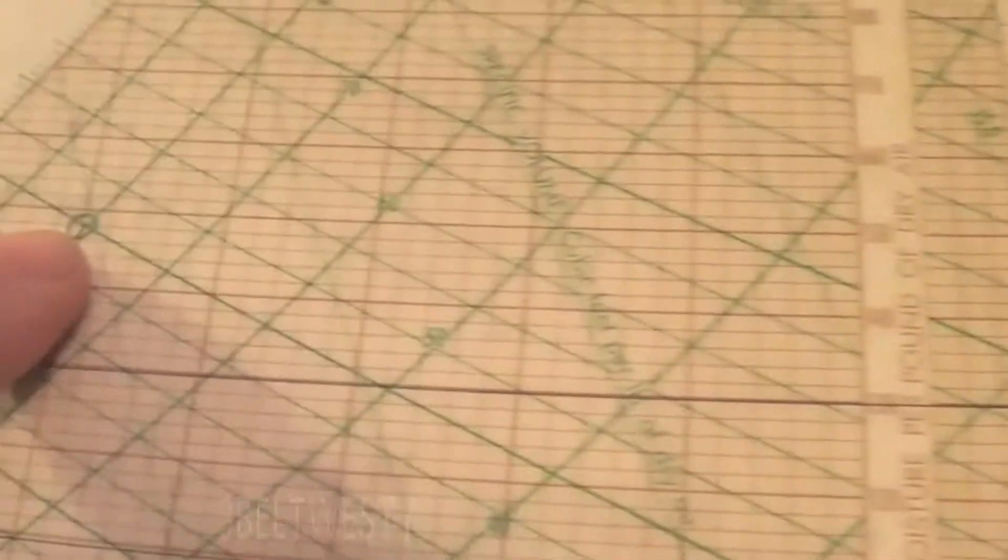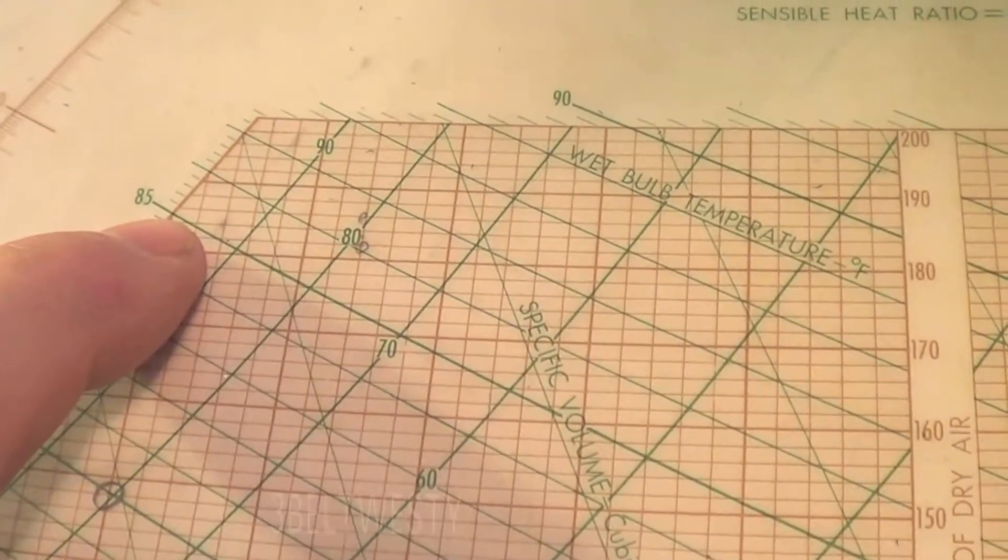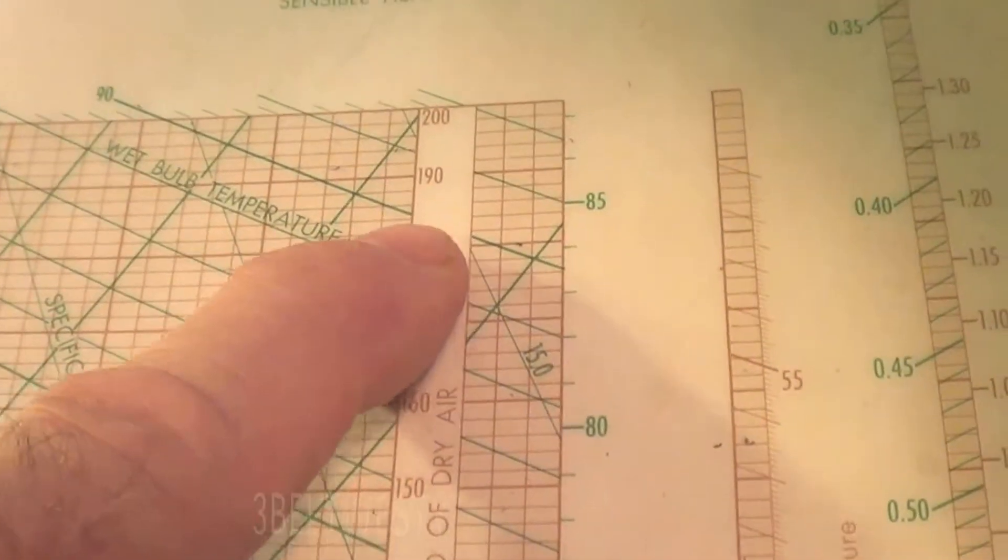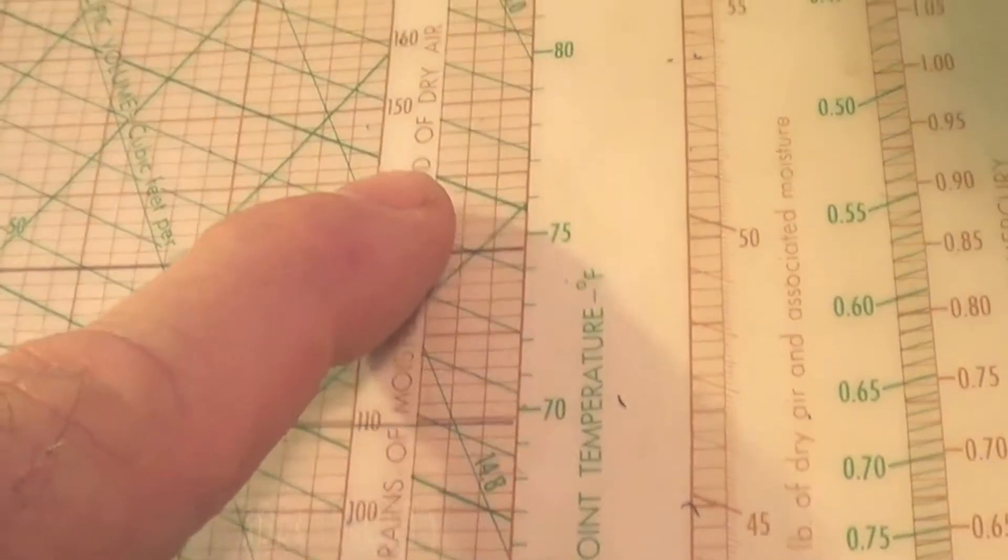If it was totally saturated at the same temperature, you'd go up here and hit 85 wet bulb and dry bulb. Extend this over, you have about 185 grains per pound. So the ratio of this to this other number in grains is 80%.